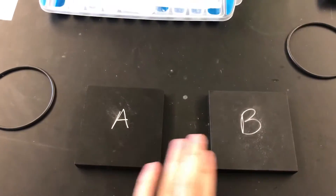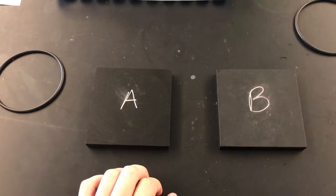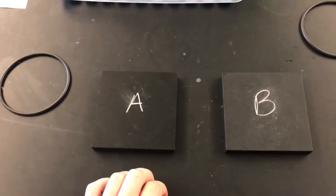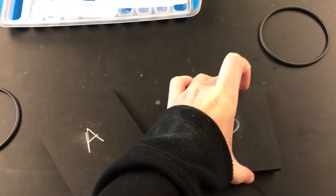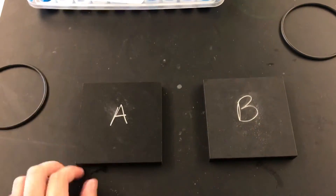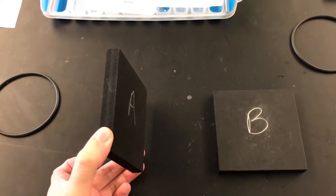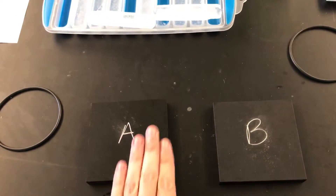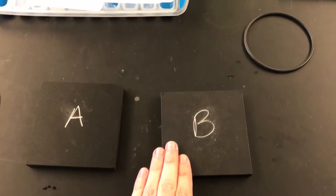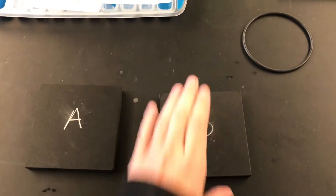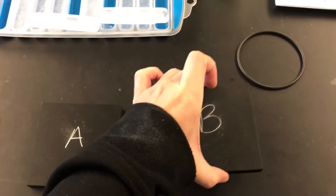You can see I have two different blocks here, one marked A and one marked B. If you were to feel them, they feel very different — they're made of two different materials. A is kind of plasticky, it's very light, and it feels just room temperature. B on the other hand is metallic, it feels very cold, it's much heavier.